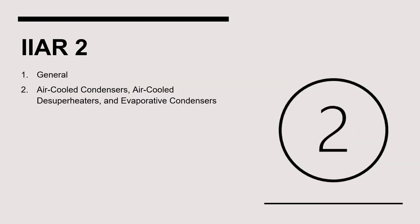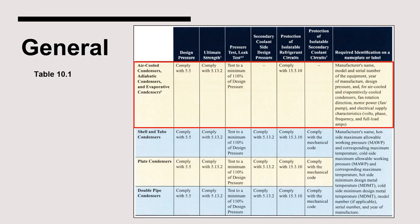Let's start with IIAR Standard 2, which addresses general aspects of condensers. We'll also examine requirements for air-cooled condensers, air-cooled desuperheaters, and evaporative condensers in Chapter 10 of IIAR 2. General requirements for various types of condensers are contained in Table 10.1. These requirements include design pressure, ultimate strength, pressure and leak testing, secondary coolant side design pressure, protection of isolatable refrigerant circuits, protection of isolatable secondary coolant circuits, and required identification on a nameplate or label. Regarding condenser nameplates, these must be equipped with the manufacturer's name, model, and serial number of the equipment, year of manufacture, and design pressure. Air-cooled and evaporatively cooled condensers must also include fan rotation direction, motor power, and electrical supply characteristics.